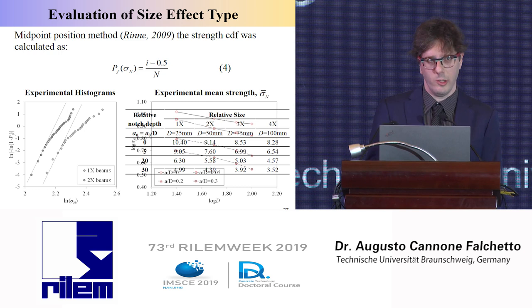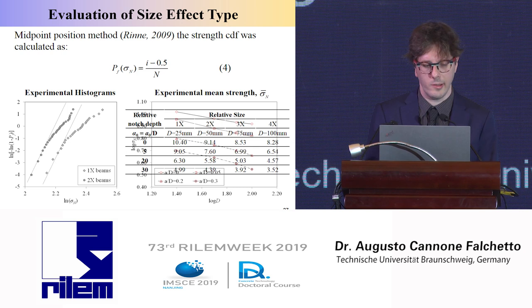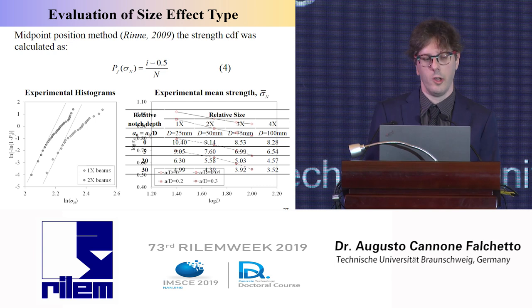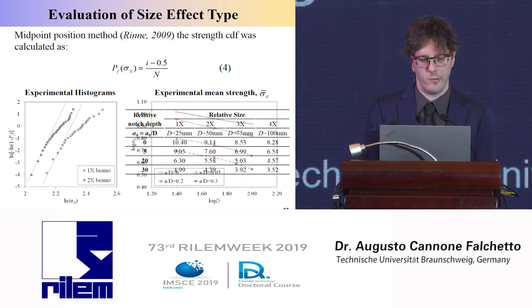After that, I plotted the strength results in the Weibull plane using the simple median rank position method. What I have is a sort of parallel trend, especially in the lower part of the Weibull plane, where I can identify the Weibull modulus of the material. This means that the Weibull modulus appears to be, for this temperature and this mixture, a parameter of the material and is an identified quantity.